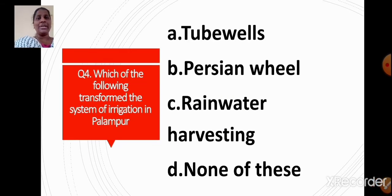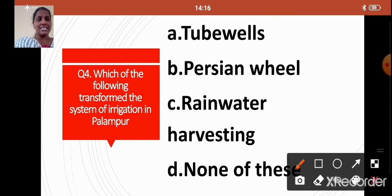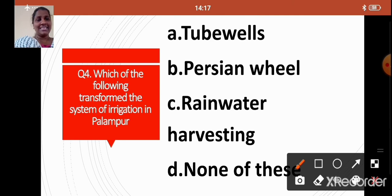Question 4: Which of the following transformed the system of irrigation in Palampur? Option A: Tube Wells, Option B: Persian Wheel, Option C: Rainwater Harvesting, Option D: None of these. The correct answer is Option A: Tube Wells.